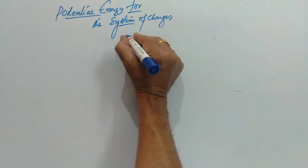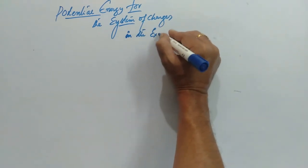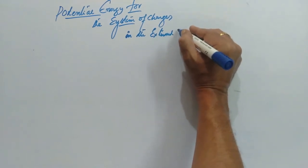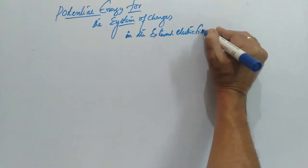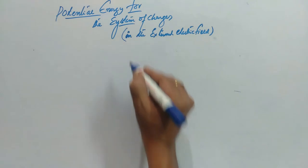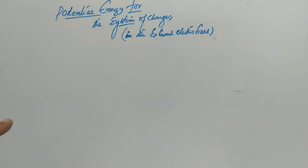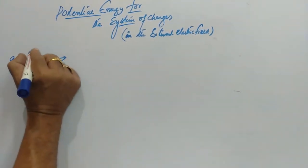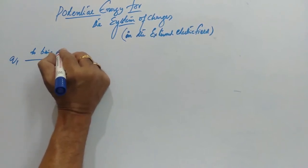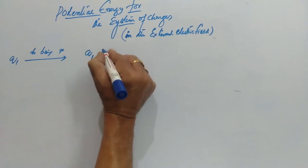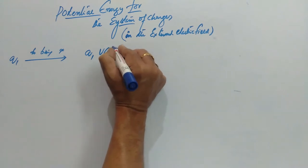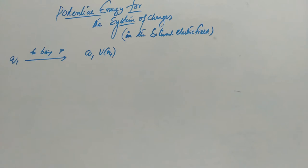Now in the influence of external electric field, suppose here already an external electric field is there whose potential is V at any particular point. Then to bring Q1 from infinity is Q1 times V(R1). That is, we want to put the Q1 charge at distance R1 from the origin where the external electric field is having a potential V, and it is a function of distance, that's why we put V(R1).